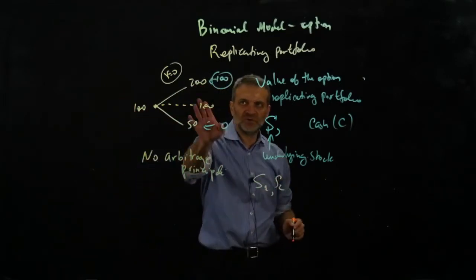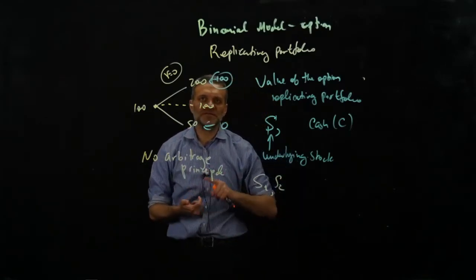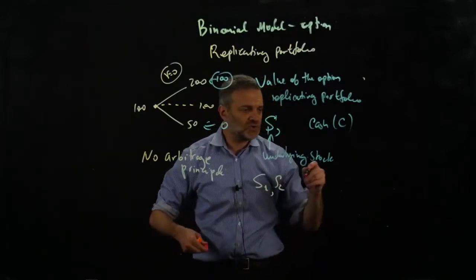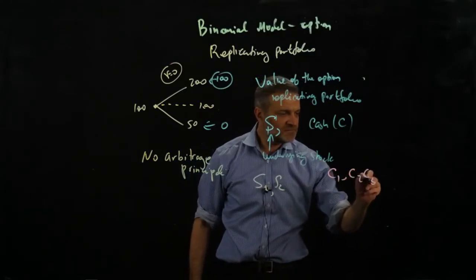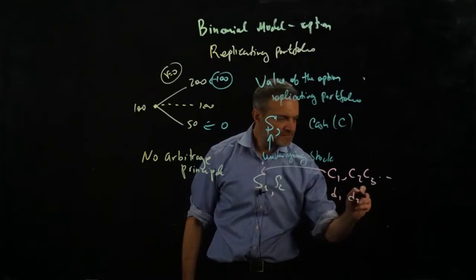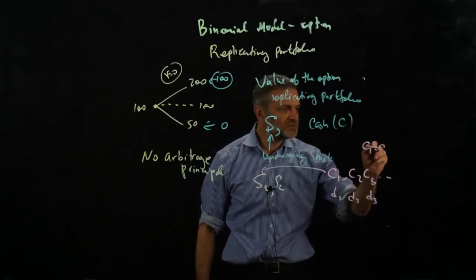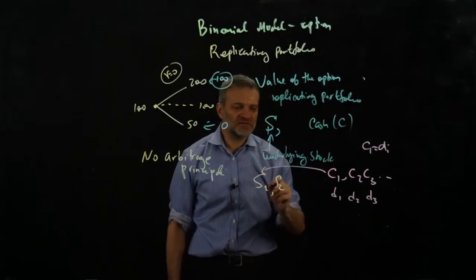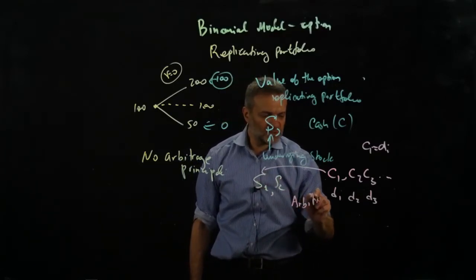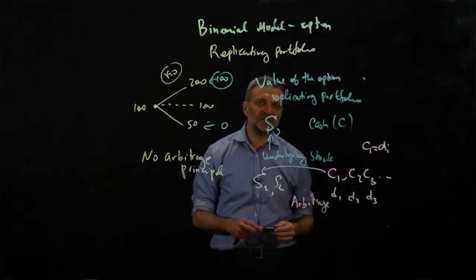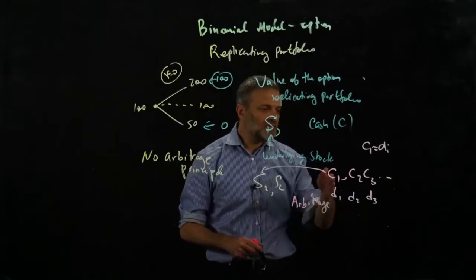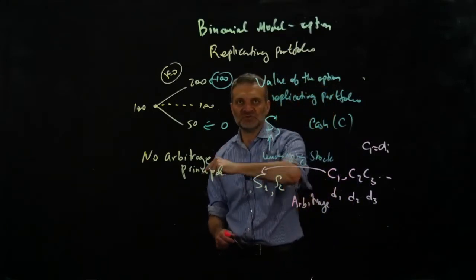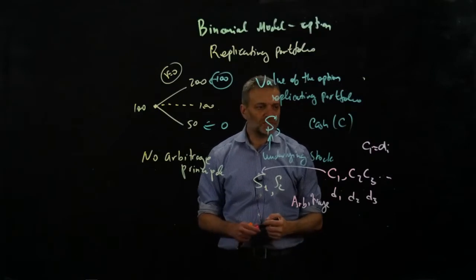This is because of the no-arbitrage principle, which says that if you have two securities — call them S1 and S2, which could be bonds, commodities, futures, anything — and they have the same cash flow stream, then the price of S1 must equal the price of S2. If they are not equal, you have an arbitrage: you can sell one and buy the other, make a profit today, and have no problem meeting the cash flows because one security covers the other.